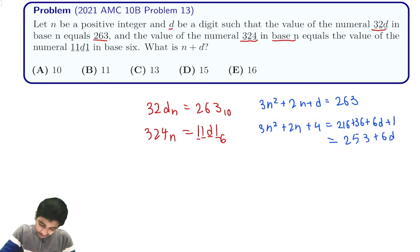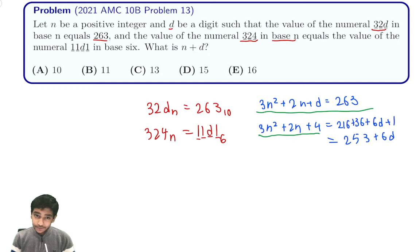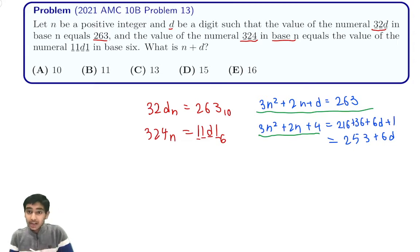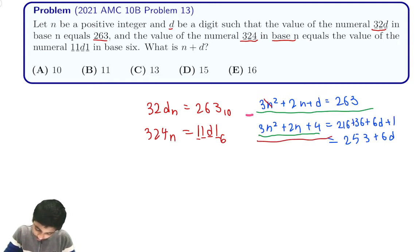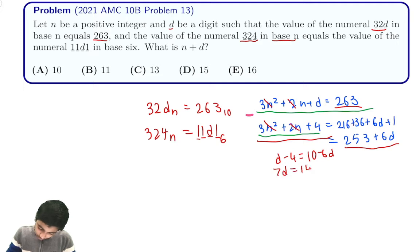You might notice that the two expressions are very similar — almost the same. 3n squared is the same, 2n is the same, except d and 4 are different. So what we want to do is subtract them, because by subtracting them we cancel out most of the terms. We're left with d minus 4 equals 263 minus (253 plus 6d), which is 10 minus 6d. From here we get that 7d equals 14, or d equals 2.